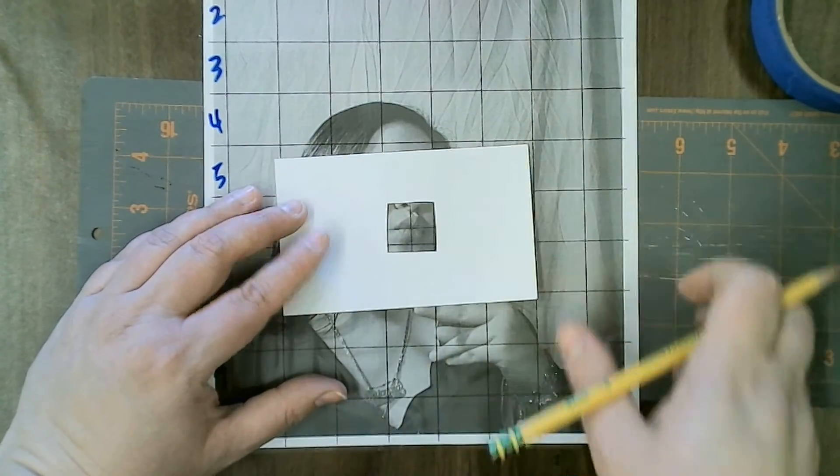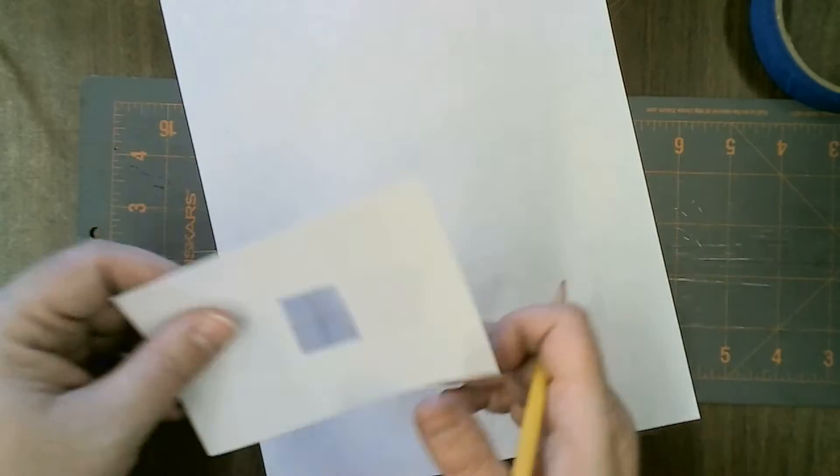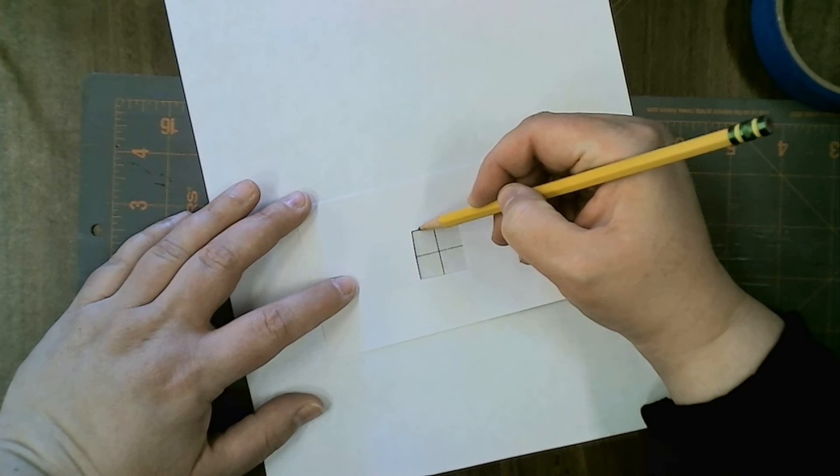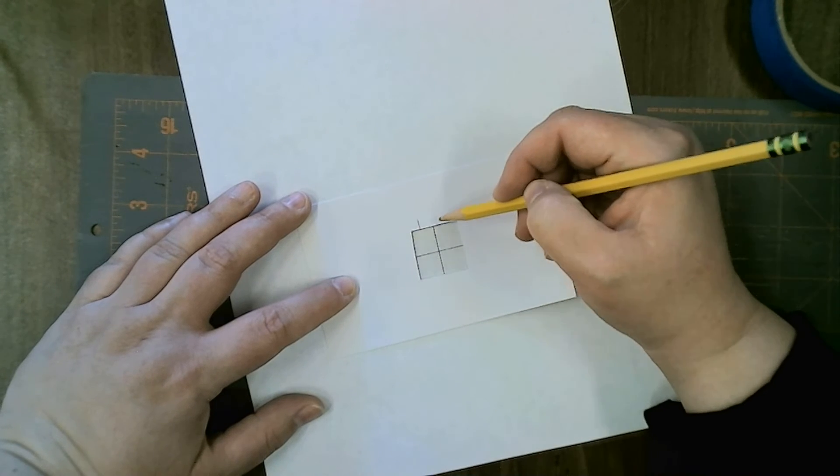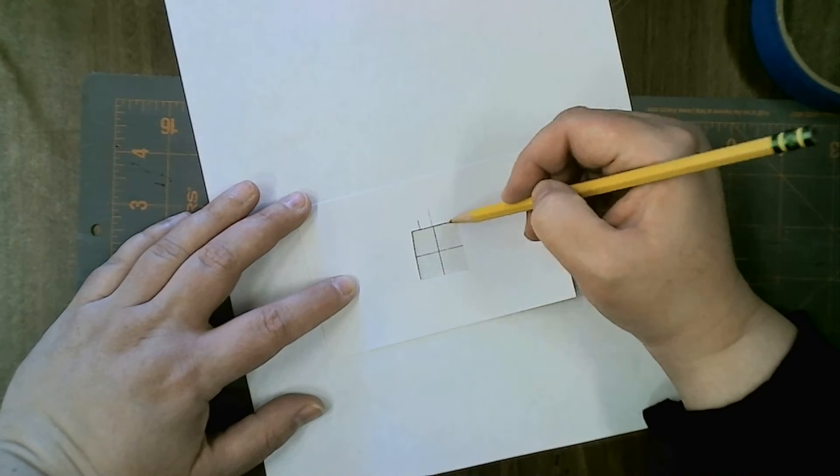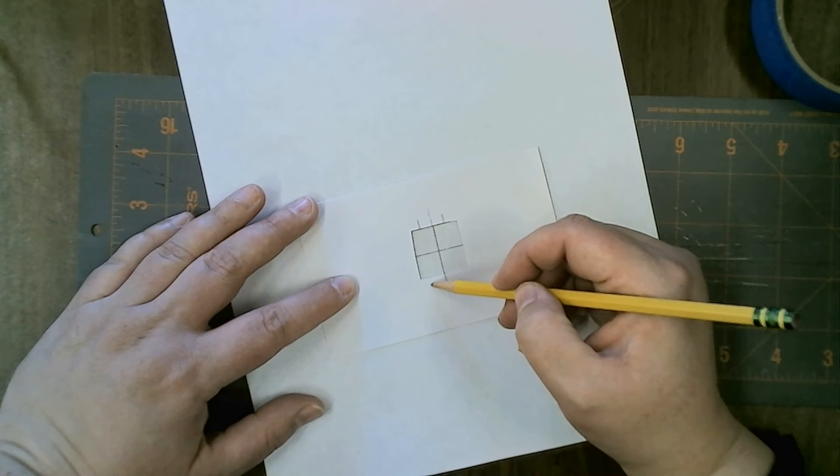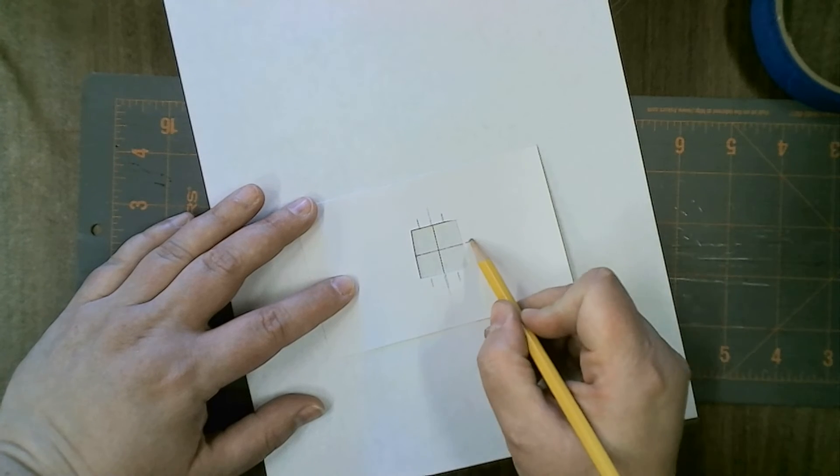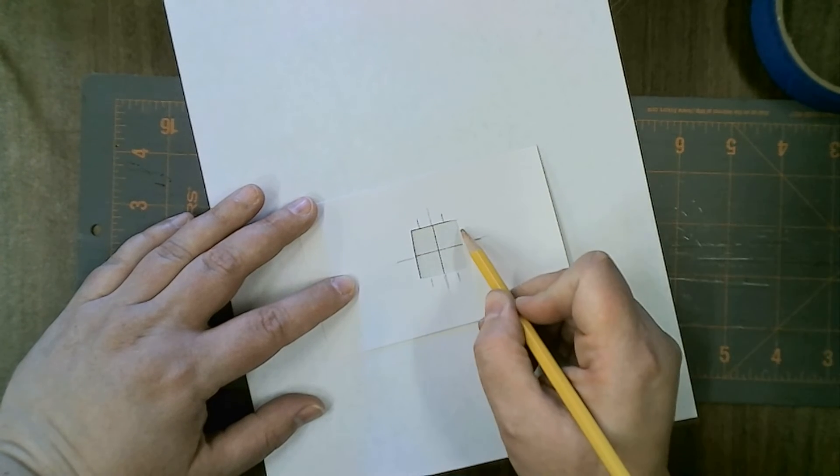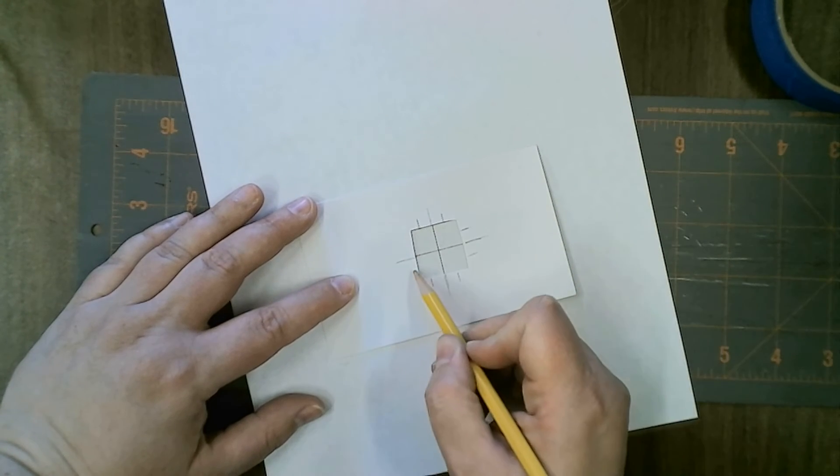You could also give yourself some further proportion markings, like halfway, half of halfway, and so on, to help with more detailed measurements within each box.